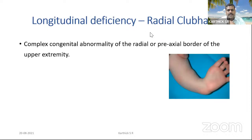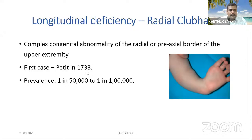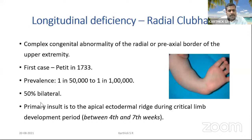Radial club hand is a longitudinal deficiency of the radial or pre-axial border of the upper extremity, with a wide phenotypic range from simple thumb hypoplasia to total absence of the radius with absence of thenar muscles. The first case was described by Petit in 1733 at autopsy — an infant with bilateral total absence of the radius. Prevalence is rare: one in 50,000 to one in 100,000. Fifty percent are bilateral, slightly higher in boys. The primary insult occurs to the apical ectodermal ridge during the critical developmental window of four to seven weeks of pregnancy.